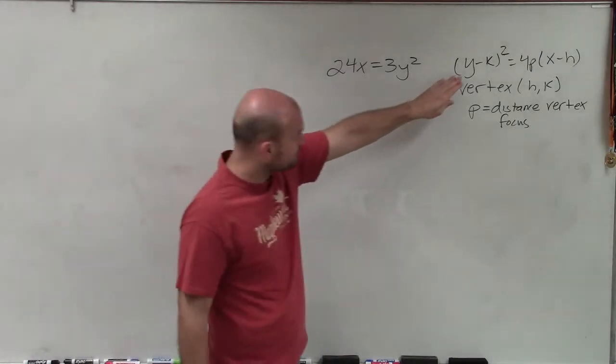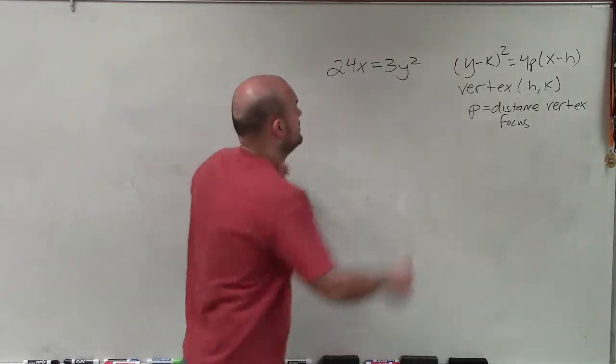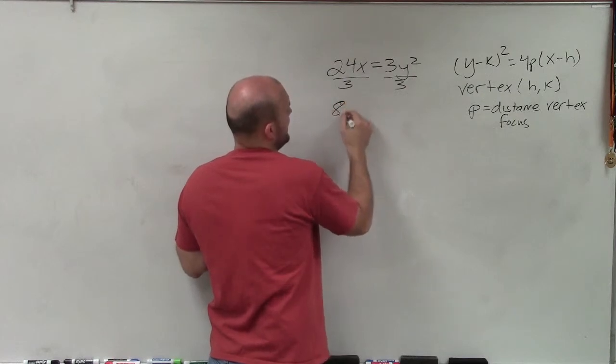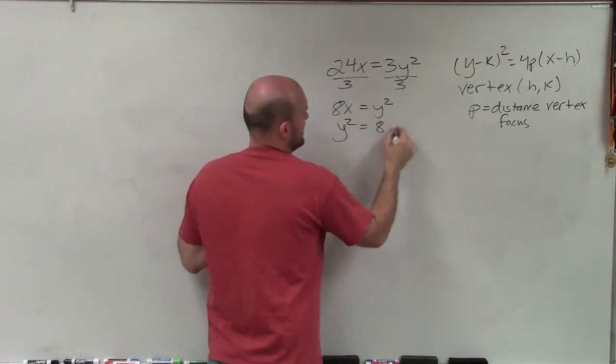So the first thing we want to do is solve for y. We want to get y squared by itself. I'm going to divide by 3. Therefore, I have 8x = y², or y² = 8x.